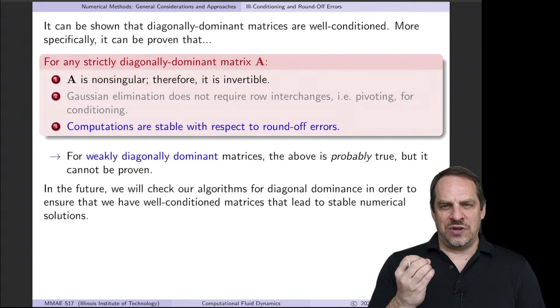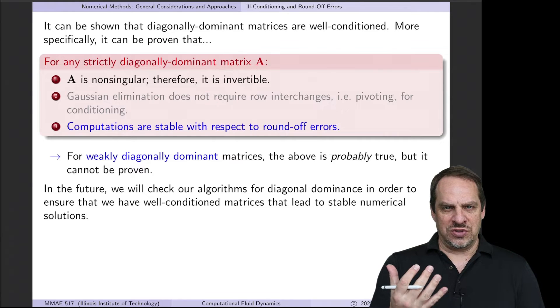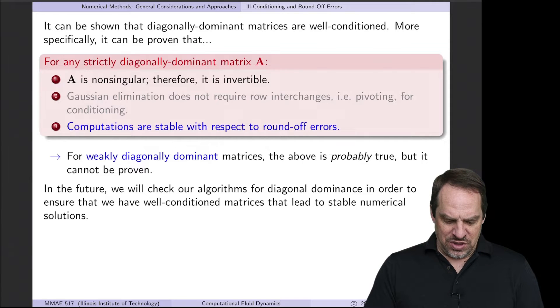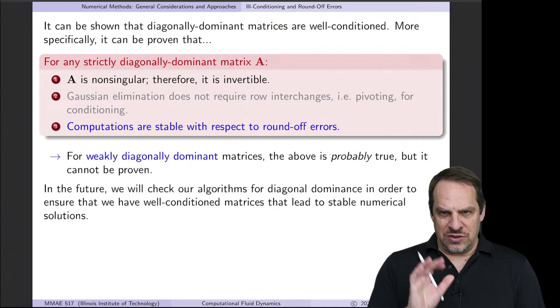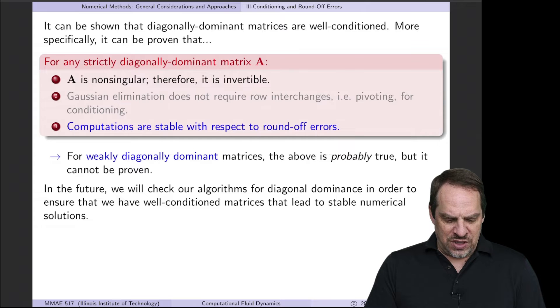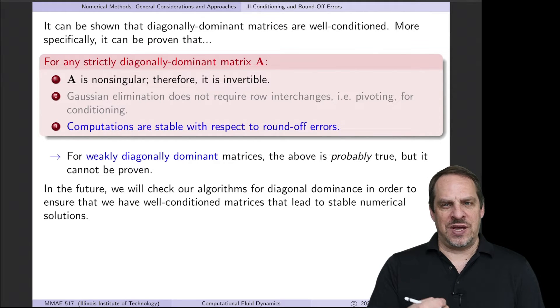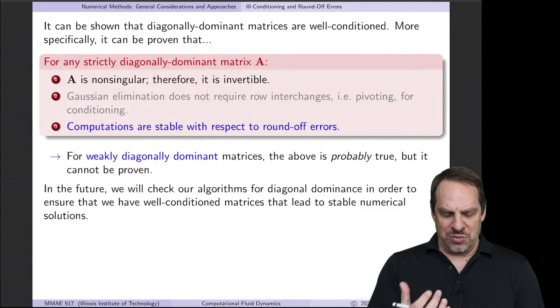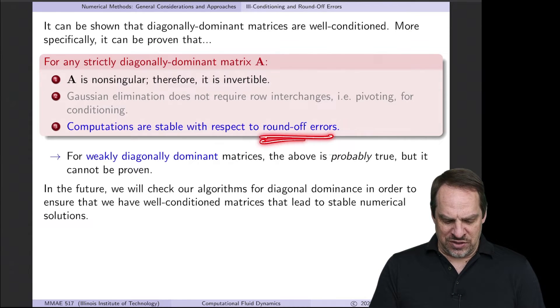The third is that, and this is the one that's important for our considerations right here, computations are stable with respect to round-off errors. So remember, these round-off errors are inevitably present in these computations on digital computers, and the question is what happens to those round-off errors. Do they grow, and do they not grow? So what this tells us, and this results from a mathematical proof, these computations are indeed stable. So I can take inverses of A, I can do operations on A, and those will be stable, numerically stable, with respect to these round-off errors.